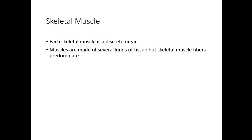When we talk about organs in everyday language, we think about the stomach, the heart, the intestines — but we don't usually think about each muscle in our body as a separate organ. However, each muscle in your body can be considered a discrete organ. Same thing goes with bones. Every single bone in your body is an organ, because each muscle is made out of several types of tissue, including skeletal muscle fibers and other types of tissue.